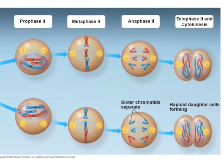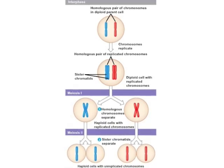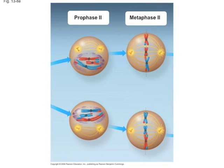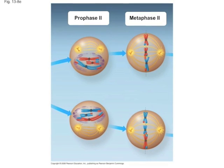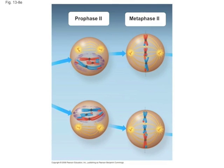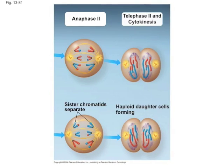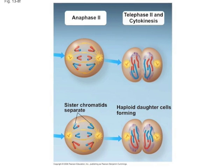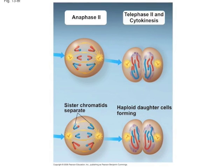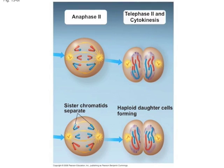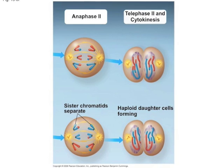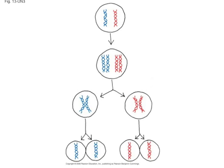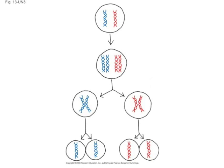That is when meiosis II begins, starting with prophase II, in which the chromosomes form and the centrioles move to opposite poles. In metaphase II, the chromosomes line up on the metaphase plate and the microtubules start to form the spindle. In anaphase II, the sister chromatids are finally pulled apart, thus making them their own chromosomes. In telophase II and cytokinesis, the chromosomes start to unwind into chromatin again and the daughter cells separate from each other. Meiosis results in four daughter cells, each with a haploid number of chromosomes.